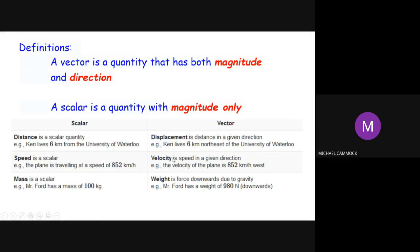Velocity and speed have the same kind of relationship: speed just tells you how fast you're going, while velocity tells you how fast you're going in a particular direction. So 852 kilometers per hour west is a vector. Displacement is related to distance — if I say she is six kilometers away but don't tell you the direction, that's distance. But displacement is a vector quantity because it specifies a particular direction from the University of Waterloo.